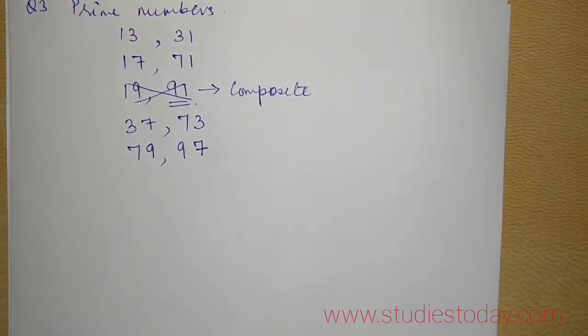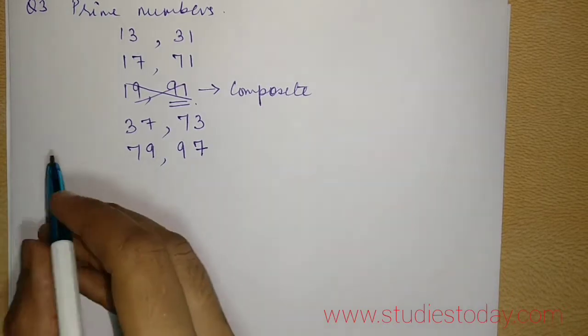97 is the last prime number before 100 though we have so many prime numbers. So I get 4 sets of numbers where they have same digits and if I reverse the order I again get a prime number. So I can write the sets.